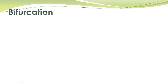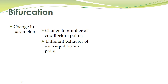In the last lecture, we studied some phenomena which are exhibited by non-linear systems. One more phenomenon which is there in non-linear systems is called bifurcation. If you change some parameter of a system, that results in a change in the number of equilibrium points, and each equilibrium point may have different behavior.